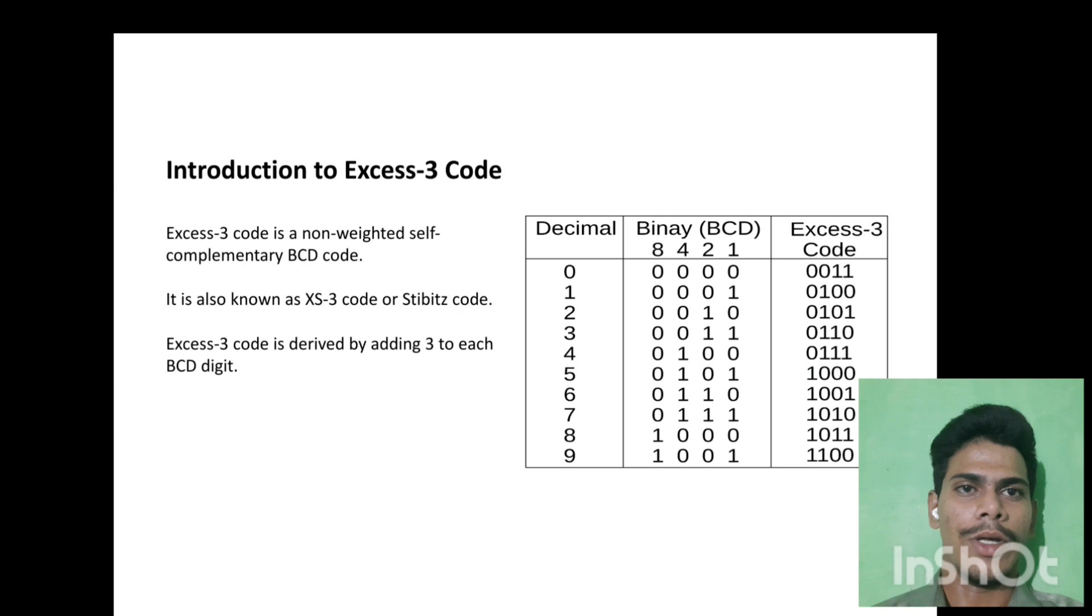Introduction to XS3 code. XS3 code is a non-weighted self-complementary BCD code. It is also known as XS3 code or stibetage code. XS3 code is derived by adding 3 to each BCD digit.